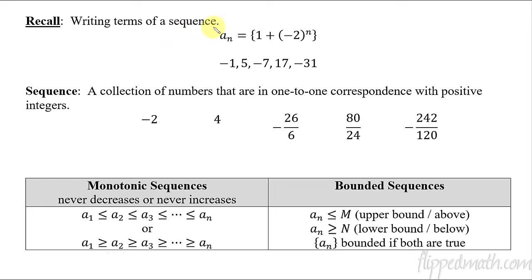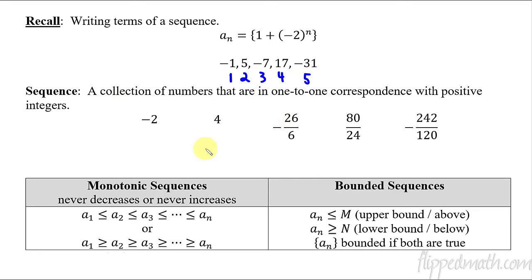Let's remember a few things — writing out terms of a sequence. a(n) is going to be a rule for coming up with the terms of each sequence. So if we say what is the very first term, you plug in 1 and get 1 plus negative 2 to the first power, which equals negative 1. If you plug in 2, the second term would be 5. If you plug in 3, you get negative 7, and so forth. That's a collection of numbers in one-to-one correspondence with positive integers.